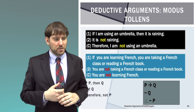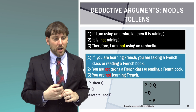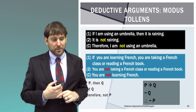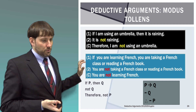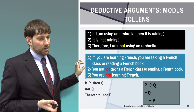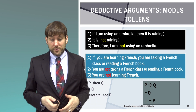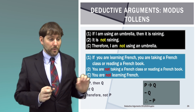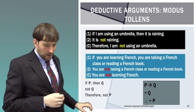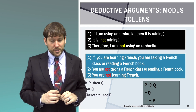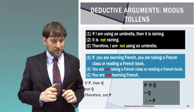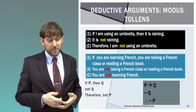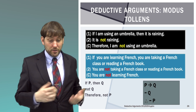Modus tollens has the same word 'modus' at the beginning but is opposite in direction. 'If I am using an umbrella, then it is raining. It is not raining. Therefore, I am not using an umbrella.' Another example: 'If you are learning French, you are taking a French class or reading a French book. You are not taking a French class or reading a French book. Therefore, you are not learning French.' The pattern is: if-P then-Q; not-Q; therefore not-P. Note this is not-Q resulting in not-P. I'm not requiring symbolization for this class, but you are welcome to use a symbolization if you know one.